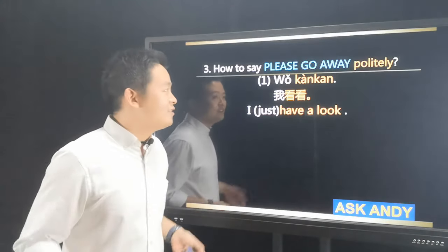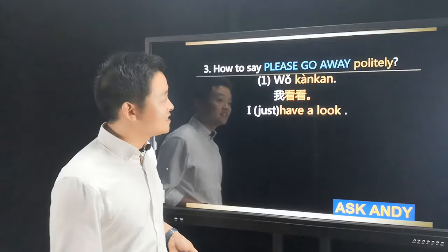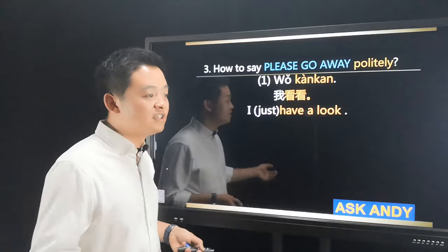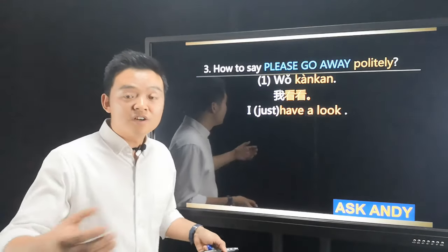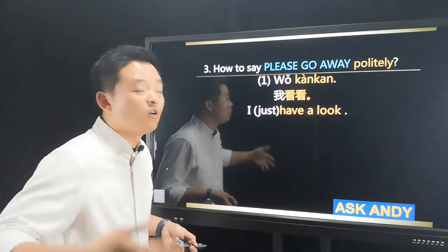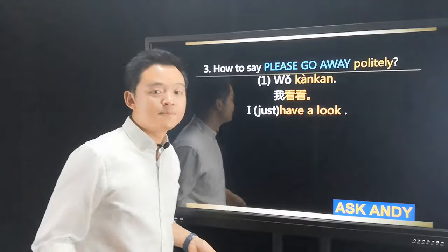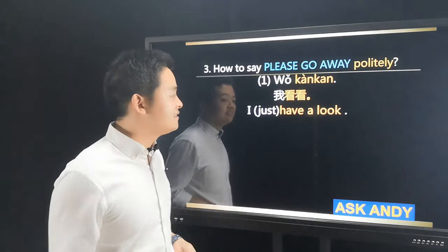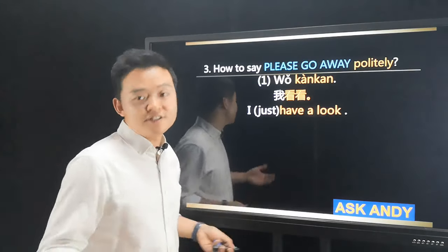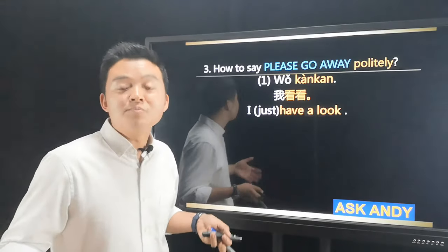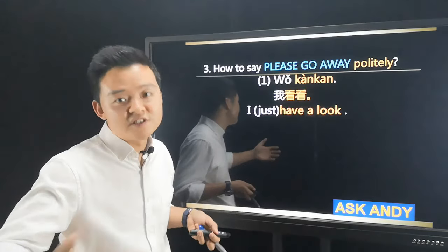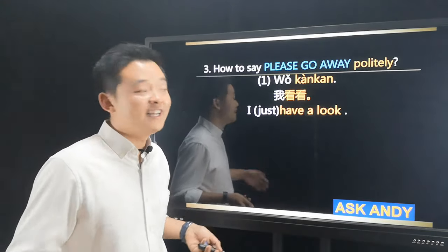Number three: how to say please go away politely. The context is you're in a shop trying to find something you like or doing window shopping, and there's a shopkeeper following and staring at you. What can you say? You say 我看看. Literally it means 'I have a look' — so I'm just having a look, I may not buy anything, I may not be your potential customer, so please go away. They understand it and will go away.